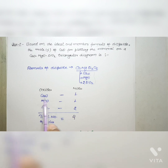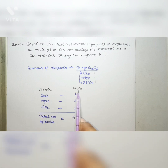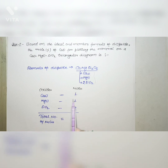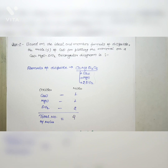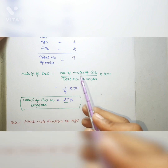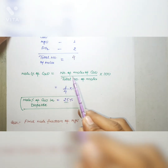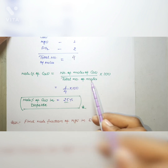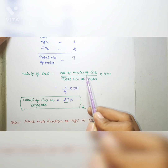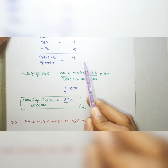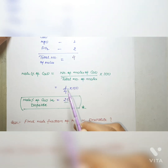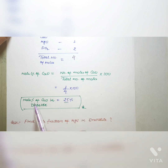There are three oxides: calcium oxide, magnesium oxide, and SiO₂. The number of moles are: one mole of CaO, one mole of MgO, and two moles of SiO₂, giving a total of four moles. To calculate the mole percentage of CaO, apply the formula: mole percentage of CaO equals moles of CaO divided by total moles, multiplied by 100. That is 1/4 × 100 = 25%.